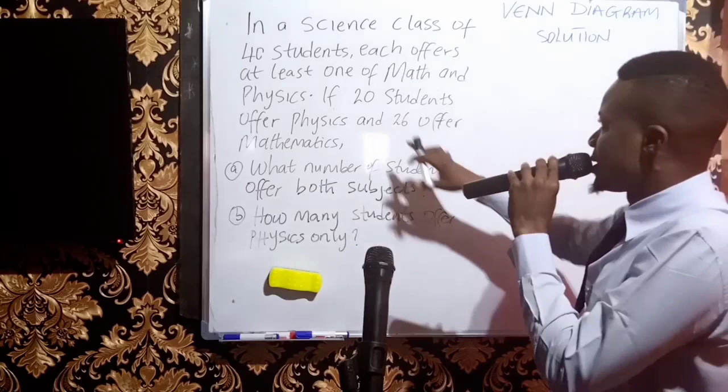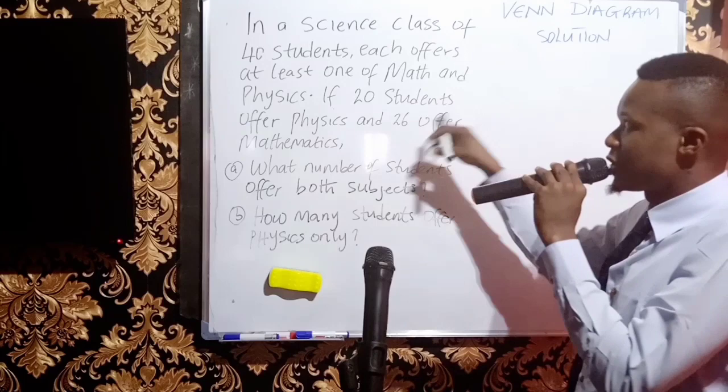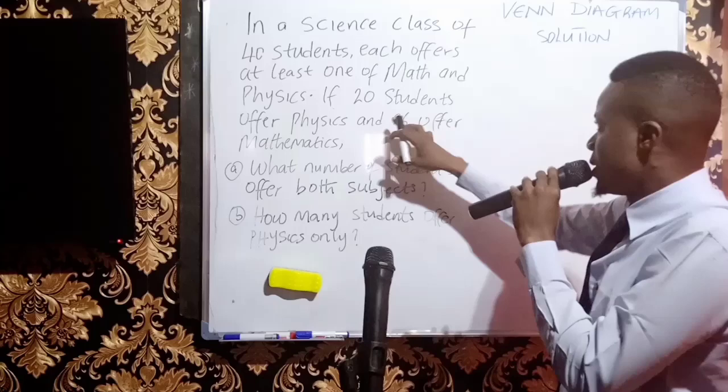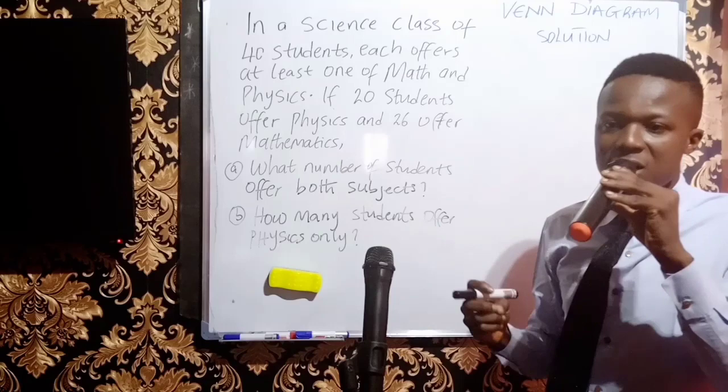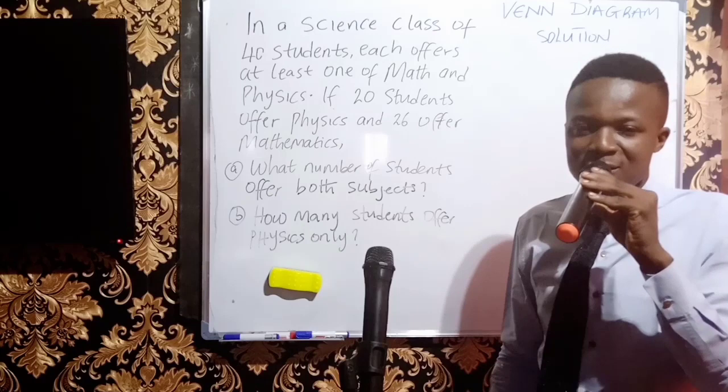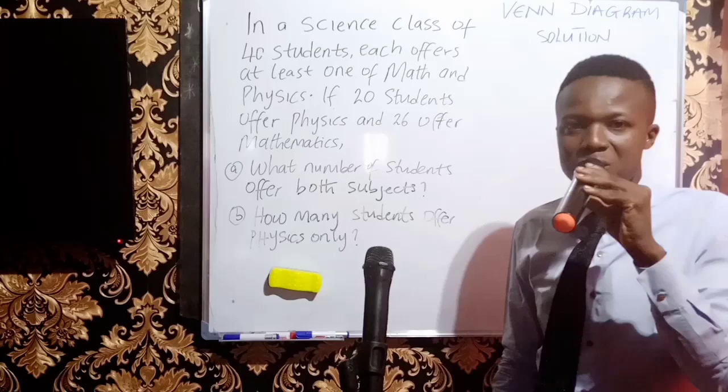Many people will start to wonder about this question, thinking it is somehow incorrect — because 20 students offer physics and 26 offer mathematics, and their sum is 46, which is more than 40. But some students can offer more than one subject at the same time, so you don't count that person as a double student.